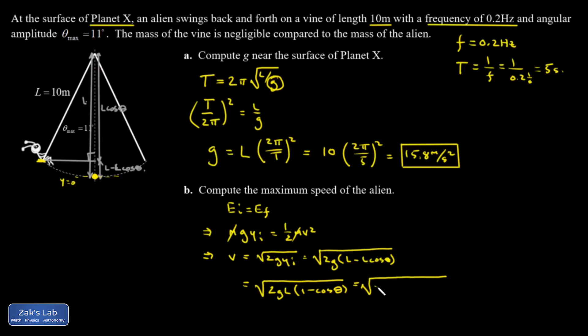I plug in my numbers. Remembering that we're on planet X, so G is different now. It's 15.8. L was 10. Then I have a 1 minus cosine 11 degrees. And the maximum speed of the alien comes out to 2.41 meters per second.